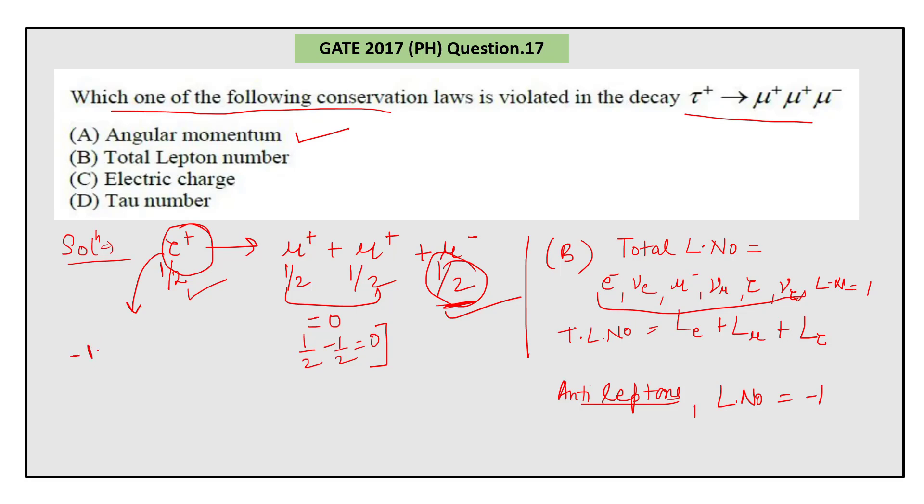On the right-hand side, both of these are anti-leptons, so they have lepton numbers minus one and minus one. This one is a lepton, so it has lepton number plus one, and they will cancel each other. So total lepton number on the left-hand side equals total lepton number on the right-hand side, which means it is also not violating.